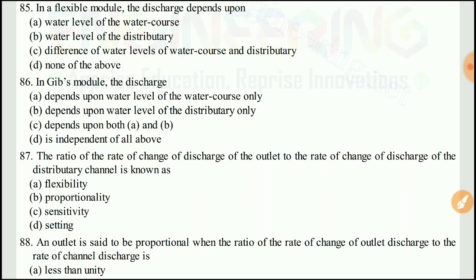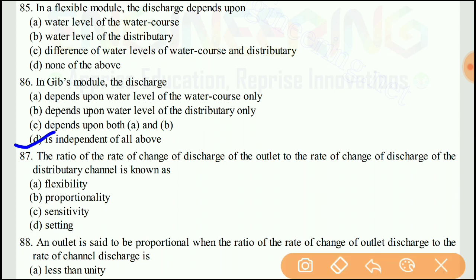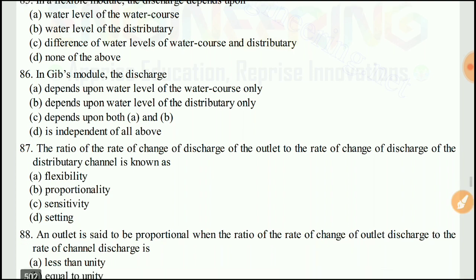Question 86: A rigid module (give module) is independent of both the water course and the distributary — independent of all above conditions.